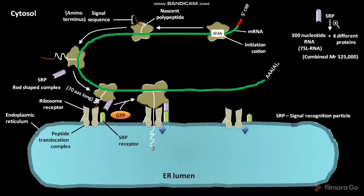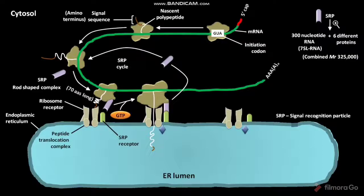The SRP then dissociates from the ribosome and is freed to bind to another ribosome and signal sequence. Along with this dissociation, the bound GTP on both SRP and SRP receptors undergoes hydrolysis to produce GDP and Pi. The elongation of the polypeptide chain then resumes.